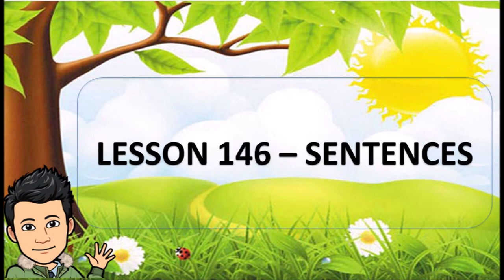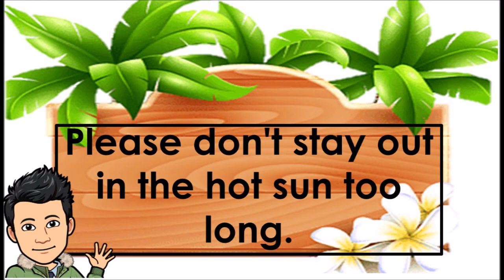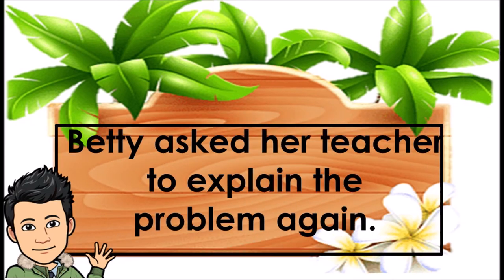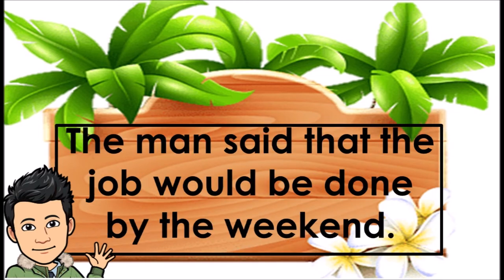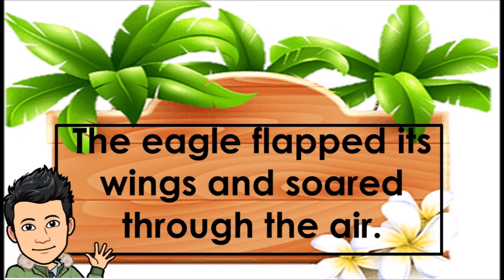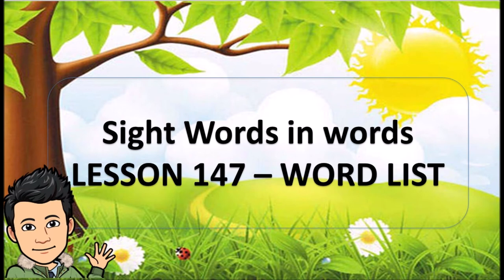Lesson 146, Sentences. You may choose one or the other, but not both. Please don't stay out in the hot sun too long. Frank won't complain about getting a long holiday. Betty asked her teacher to explain the problem again. Sally could hear the breeze whisper through the trees. The man said that the job would be done by the weekend. A train can move very quickly down the railroad tracks. The eagle flapped its wings and soared through the air. The president felt sure that Congress would pass the bill.